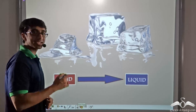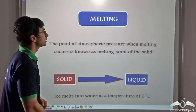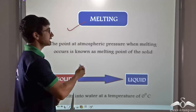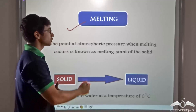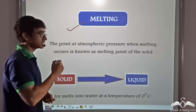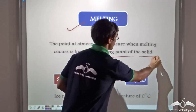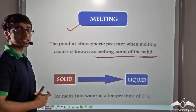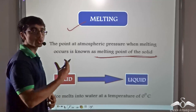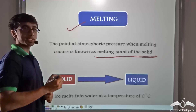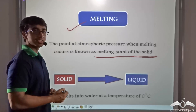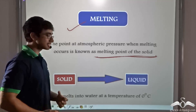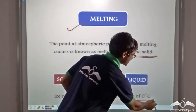This process of conversion of a solid into a liquid is known as melting. Melting is defined as the point at atmospheric pressure when melting occurs. This point when melting occurs is known as the melting point of the solid. In the previous case, we considered ice melting into water. The point at which ice melts into water is known as the melting point of ice, and the melting point of ice is zero degrees Celsius.